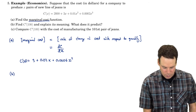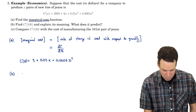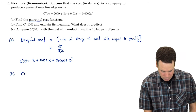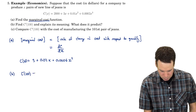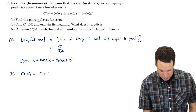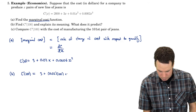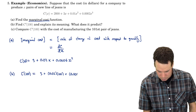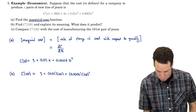Let's find C prime of 100 and explain its meaning. So what does C prime of 100 mean? That's 3 plus 0.02 times 100 plus 0.0006 times 100 squared.